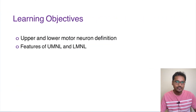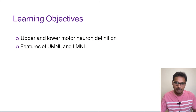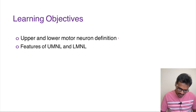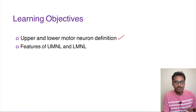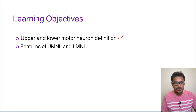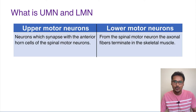What is the objective for today's topic? First, we have to understand what is upper motor neuron and what is lower motor neuron. Next, we will be seeing the difference in features of upper motor neuron lesion and lower motor neuron lesion. So, coming to what is upper motor neuron and what is lower motor neuron.